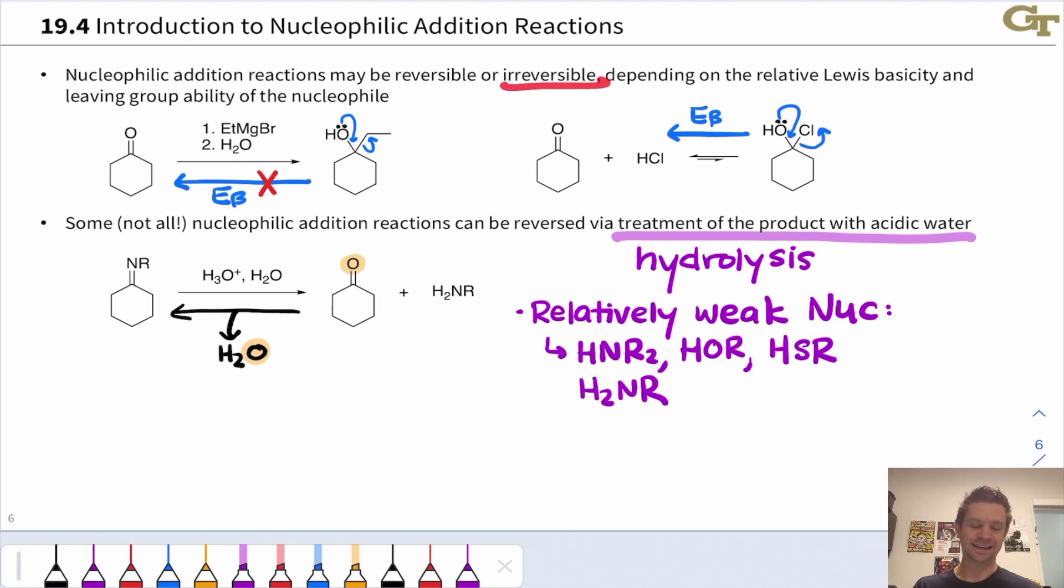When the nucleophile is much weaker, addition may be reversible. HCl, for example, is a good example of this. Protonation of the carbonyl oxygen occurs and chloride can add to the carbonyl carbon. But chloride is a pretty weak nucleophile and a pretty awesome leaving group. So beta elimination of chloride, which gets us back to the protonated carbonyl and chloride, is something that can occur readily.